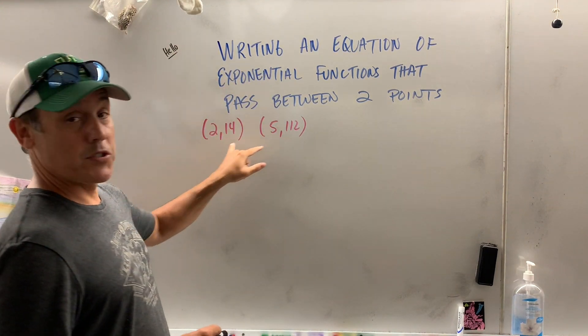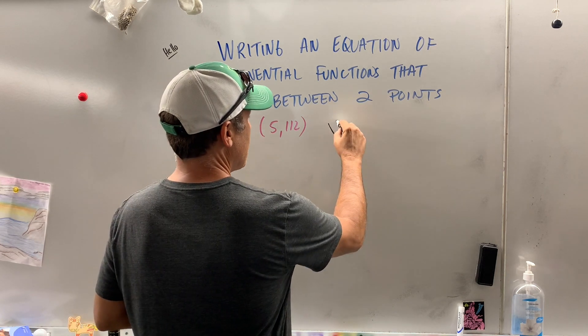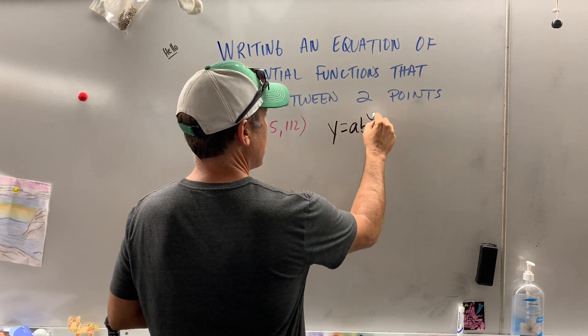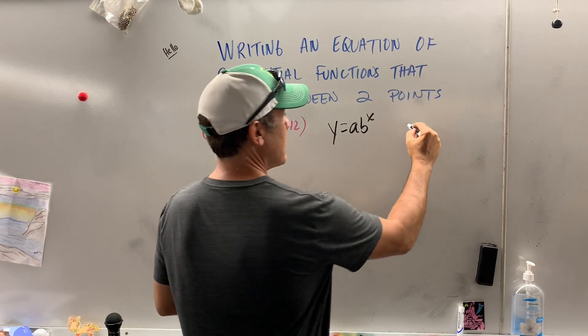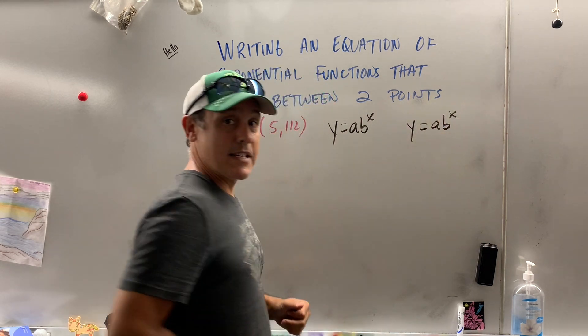Okay, here are the two points. So the first order of business is y equals a b to the x. You know that's the exponential function. y equals a b to the x. You write it down twice.